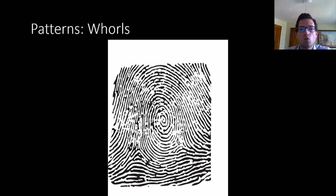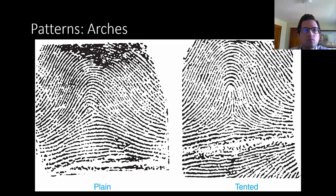We also have whorls. Here's a whorl. In contrast to loops which have only a single delta, here you'll be able to recognize not one but two deltas. You'll see on the lower left one delta, and then you'll see that core in the middle swirling around, and then you'll see another delta on the right side of the image. These two deltas are characteristic of a whorl pattern. This one you're looking at is a plain whorl.